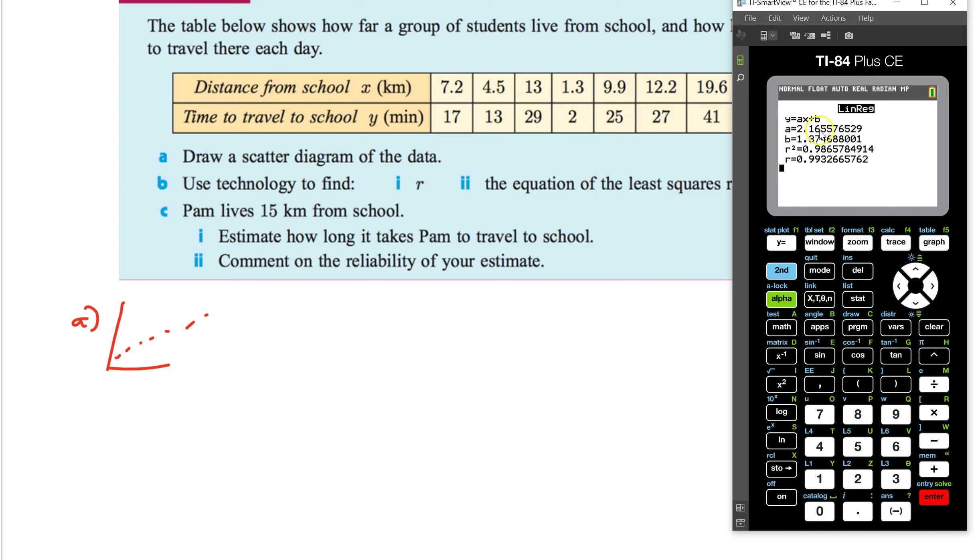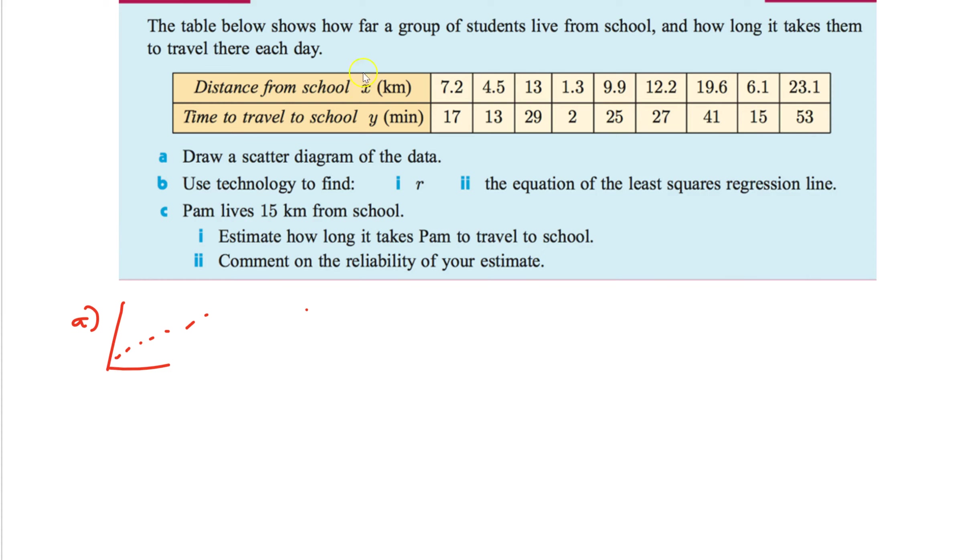And there's our equation. Y equals 2.17 x rounding three sig figs plus 1.37. So we're going to have 2.17 x plus 1.37. So that's my equation.